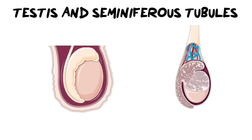The first aspect of the male reproductive system we're going to look at is the testes and the seminiferous tubules. There are some really key important pieces to focus on here. First, the external protective layer sitting outside of the testes is known as the scrotum. It protects the testes, is filled with nerve endings, and has the ability to pull the testes closer to the body or further away depending on external temperature, because sperm needs to be made at about two degrees lower than internal body temperature.